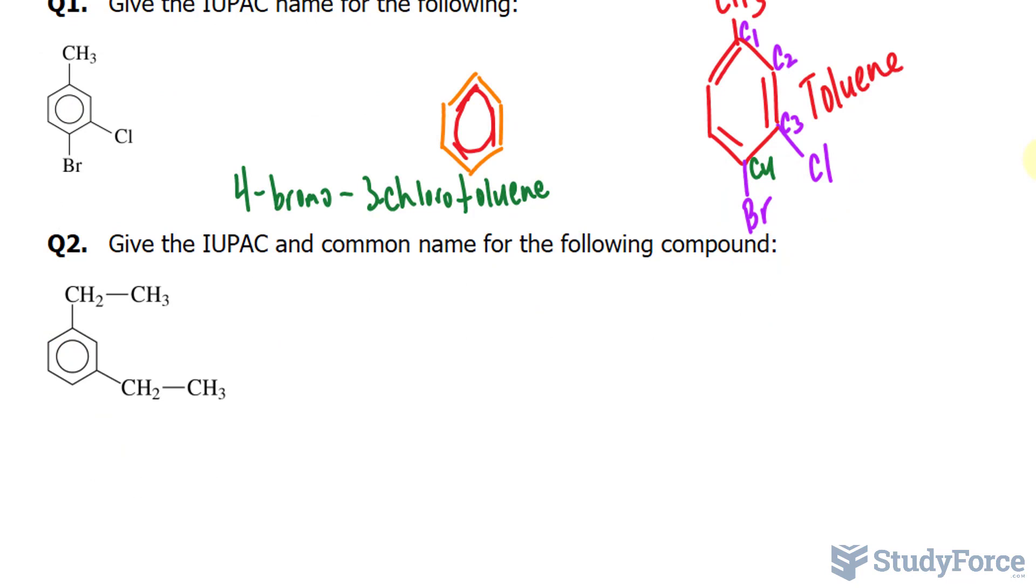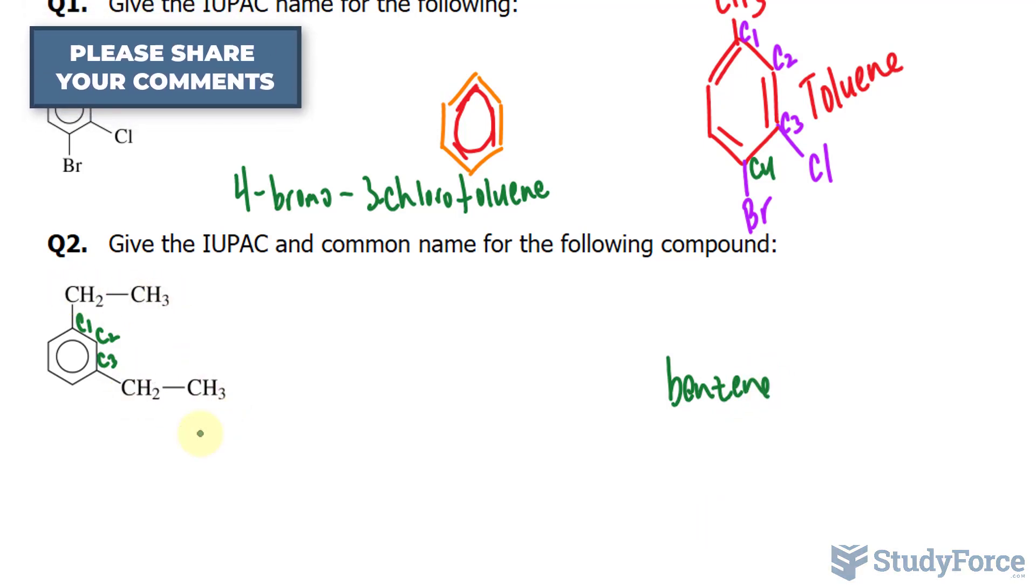Once again, we need to give the IUPAC name and the common name for this. We will start right here, C1, C2, C3. And we'll end with benzene. We have an ethyl group and an ethyl group, a two-carbon chain on C1 and C3.